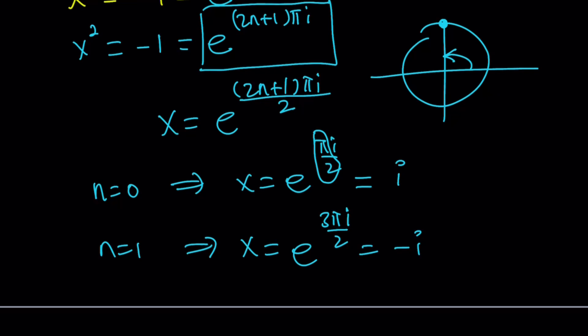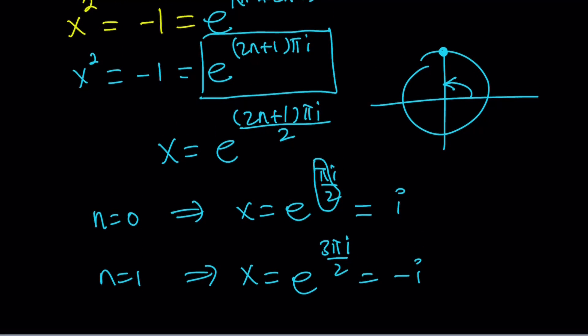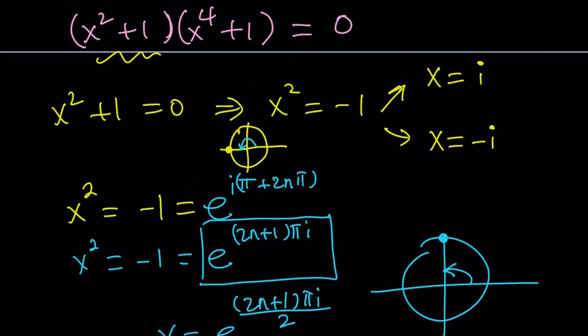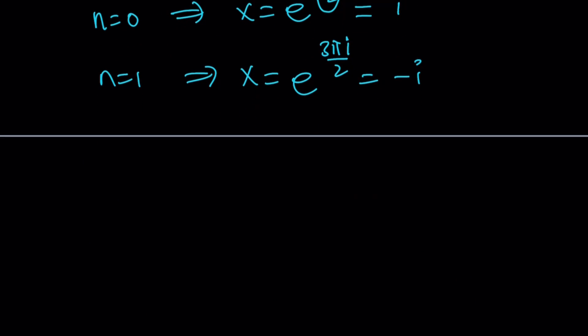Hopefully, this makes sense. So we can find the solutions. And the general method is obviously better. Because next, we're going to take the fourth roots of -1. So it's going to be more interesting.